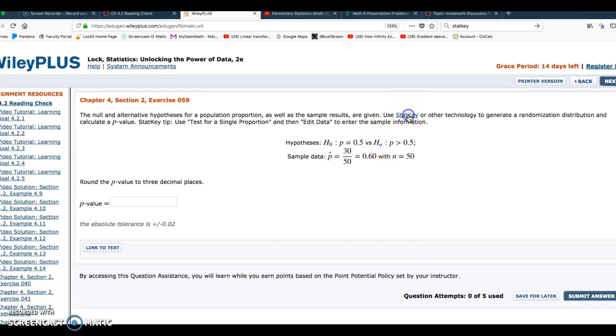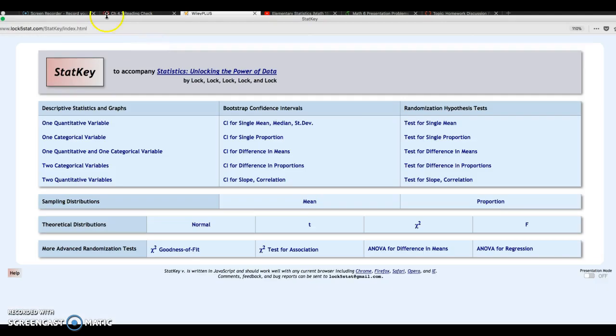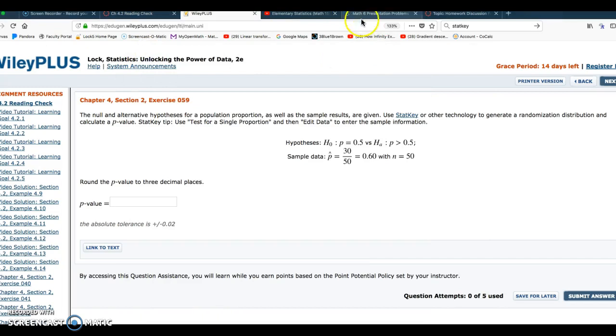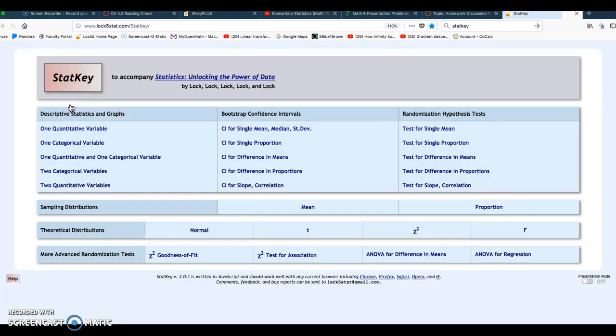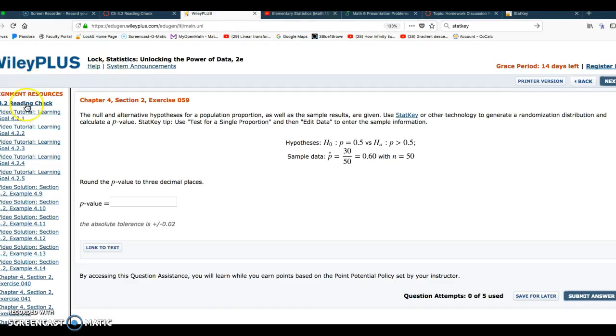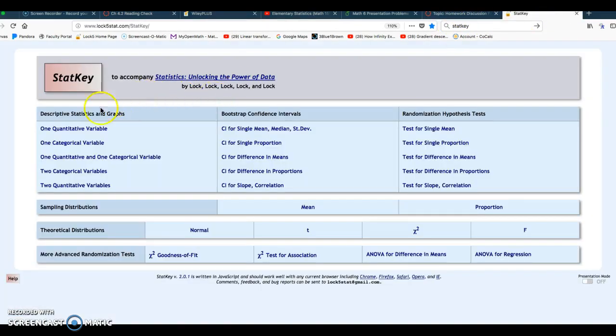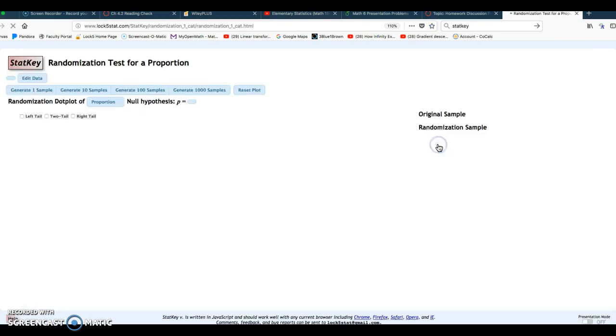So I'm going to go to StatKey. I'm just going to go to StatKey in the same browser I'm using, so I'll Google StatKey. And for this problem, it gives us a hint that we're in Chapter 4, and this is going to test for single proportion. So when you're in StatKey, this first column is Chapter 2, second column goes with Chapter 3, and then this third column to the right is Chapter 4. So we're doing a test for a single proportion, so I'm going to click down on that.